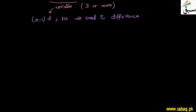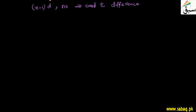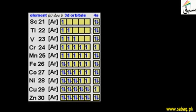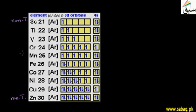Now we will talk about electronic configuration. Here we have the first transition series. It starts from scandium and ends at zinc. We can see that scandium and zinc are non-typical transition elements, because the properties of typical transition elements are not shown by them — for example, these three or more variable oxidation states are not shown.